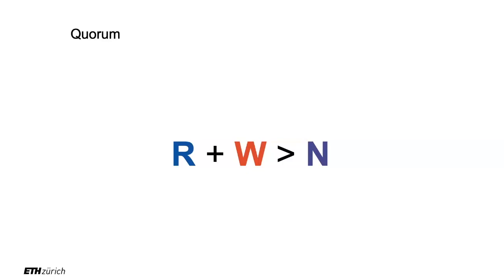If you synchronously write something and then try to read that value, you'd like to know if you read the wrong value. If R plus W was less than or equal to N, you could write to some nodes and read from others and never know you didn't read what you just wrote. It gives you the guarantee that you read from at least one node who confirmed the last write. I think that's a good intuition.